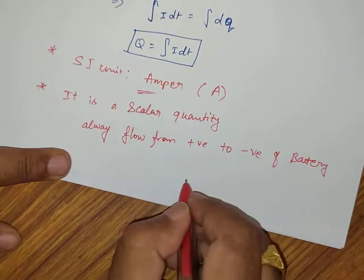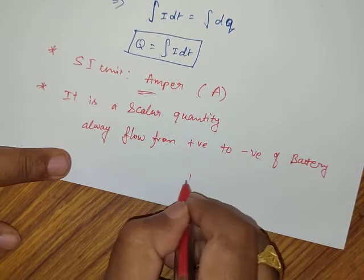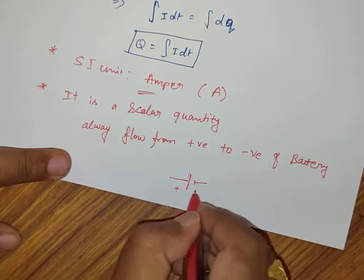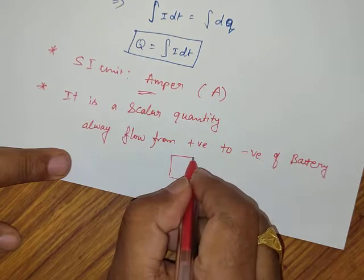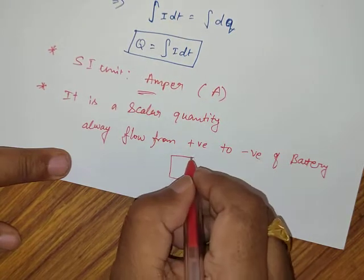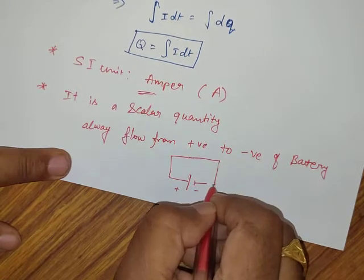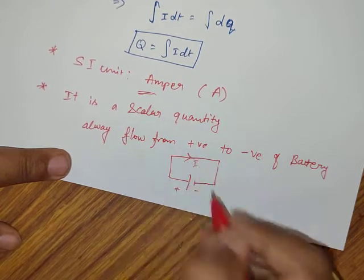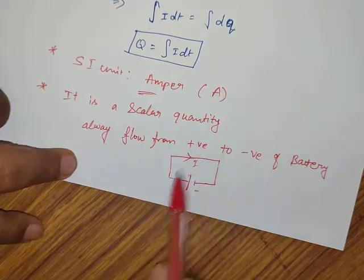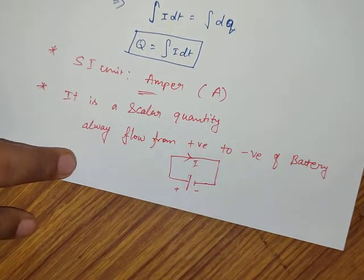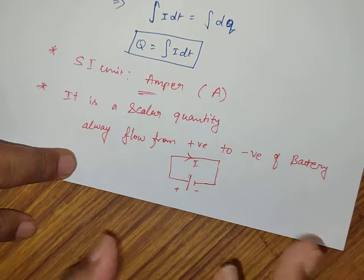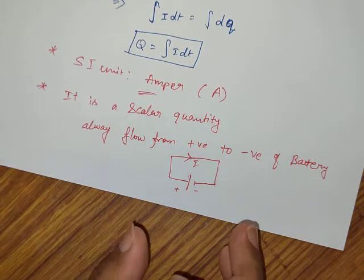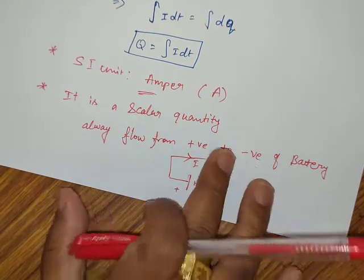The direction of conventional current: suppose you have a battery with positive and negative terminals. Current always flows in the direction from positive terminal to negative terminal of the battery. This is the basic definition and idea about electric current — it is the rate of flow of charges.